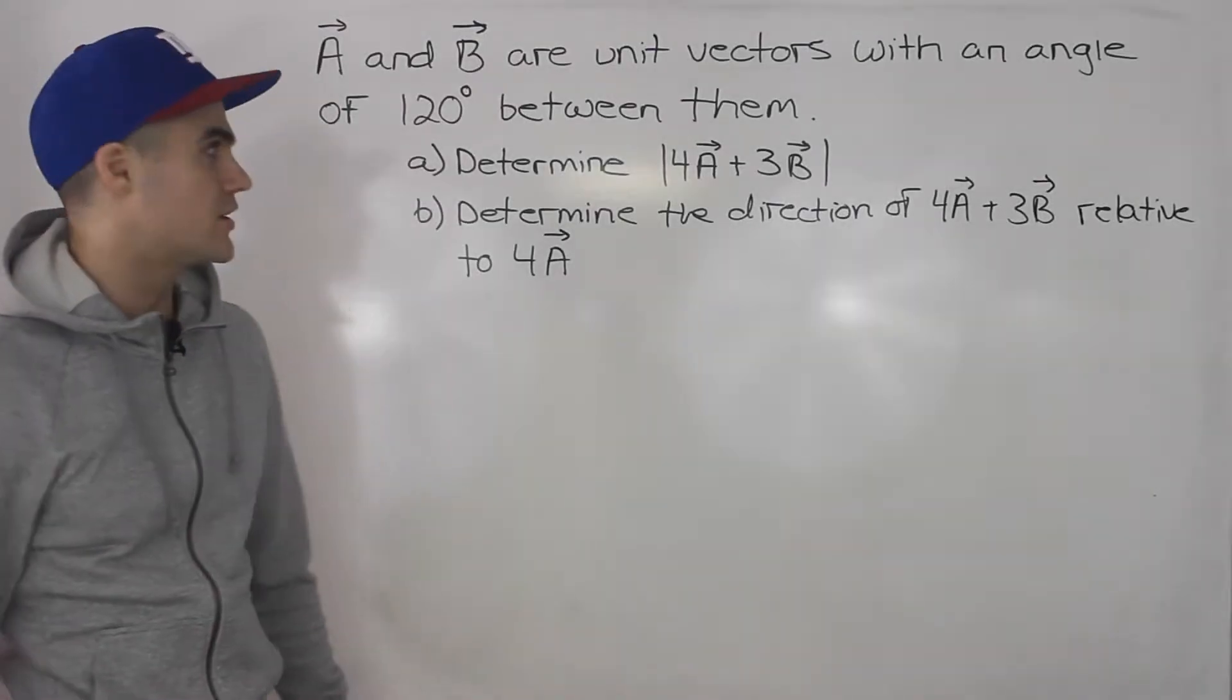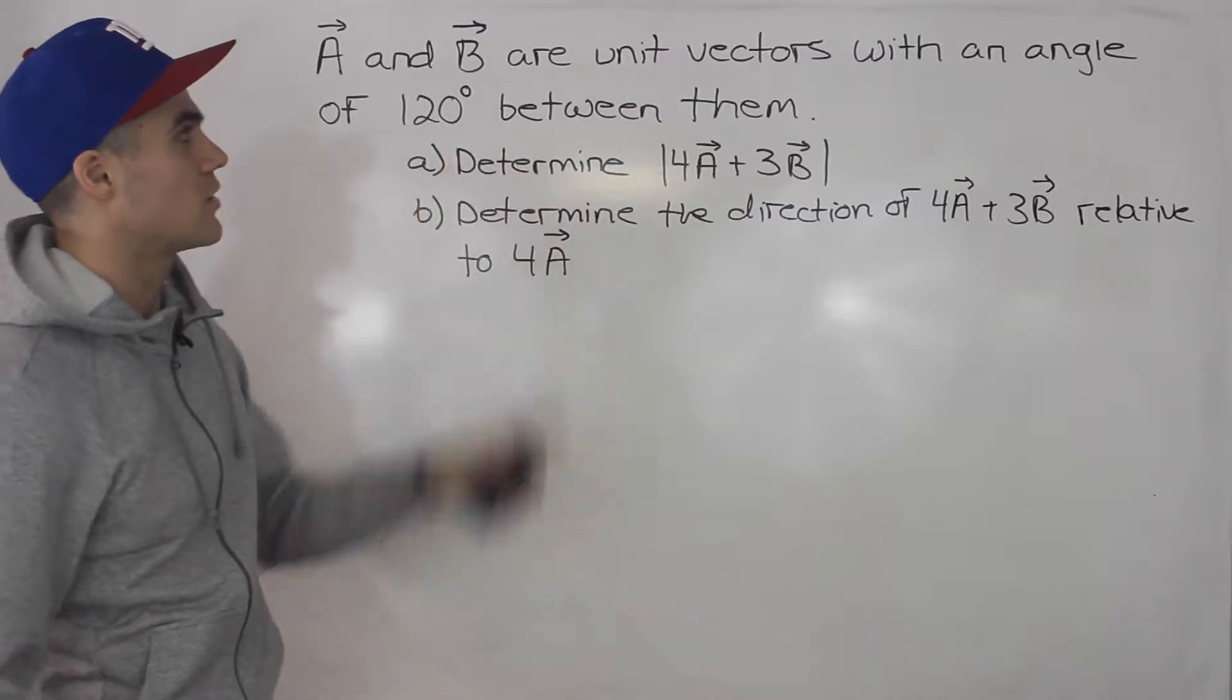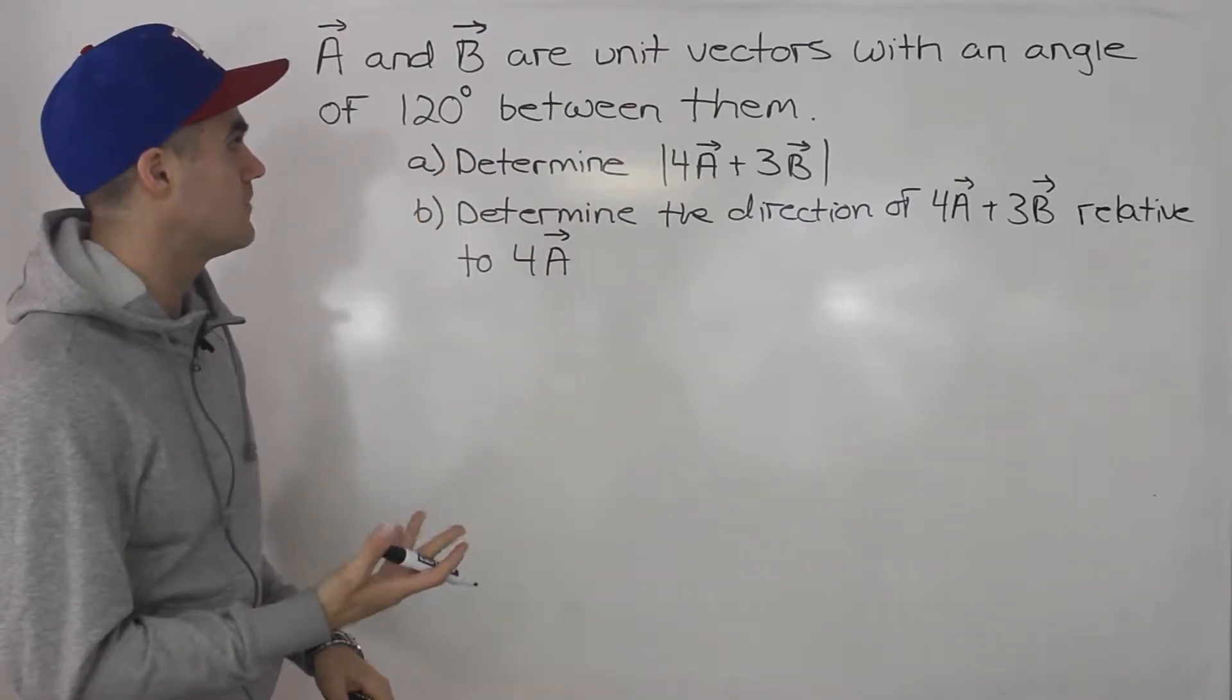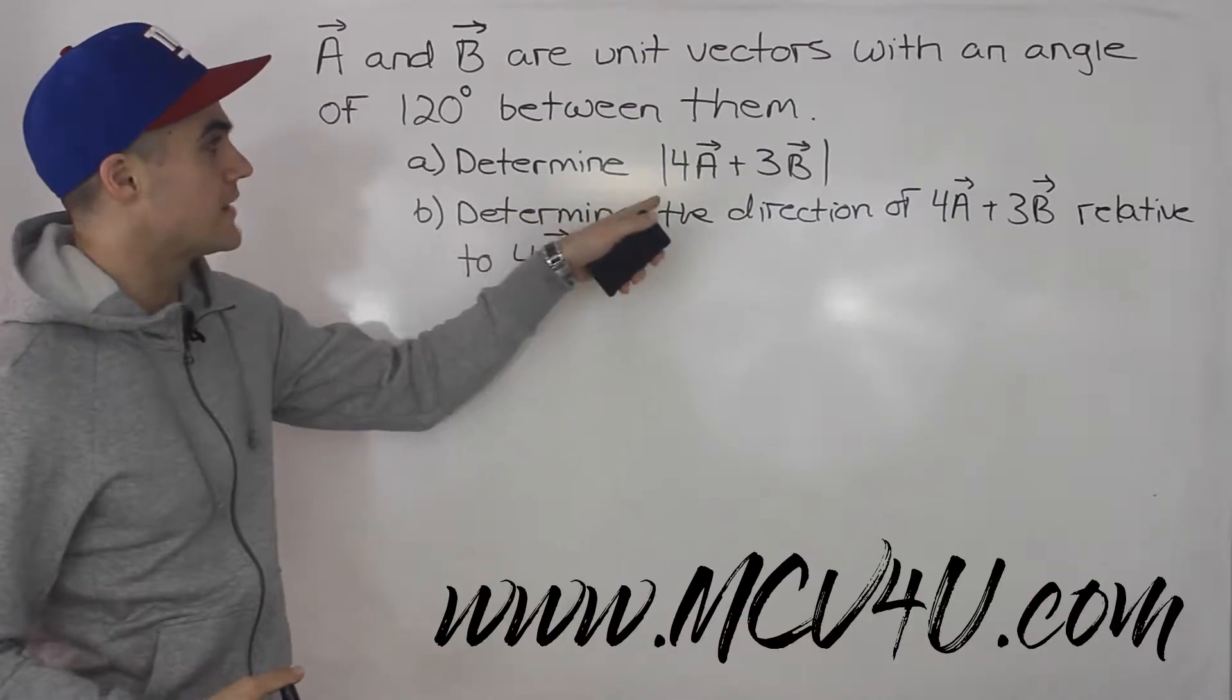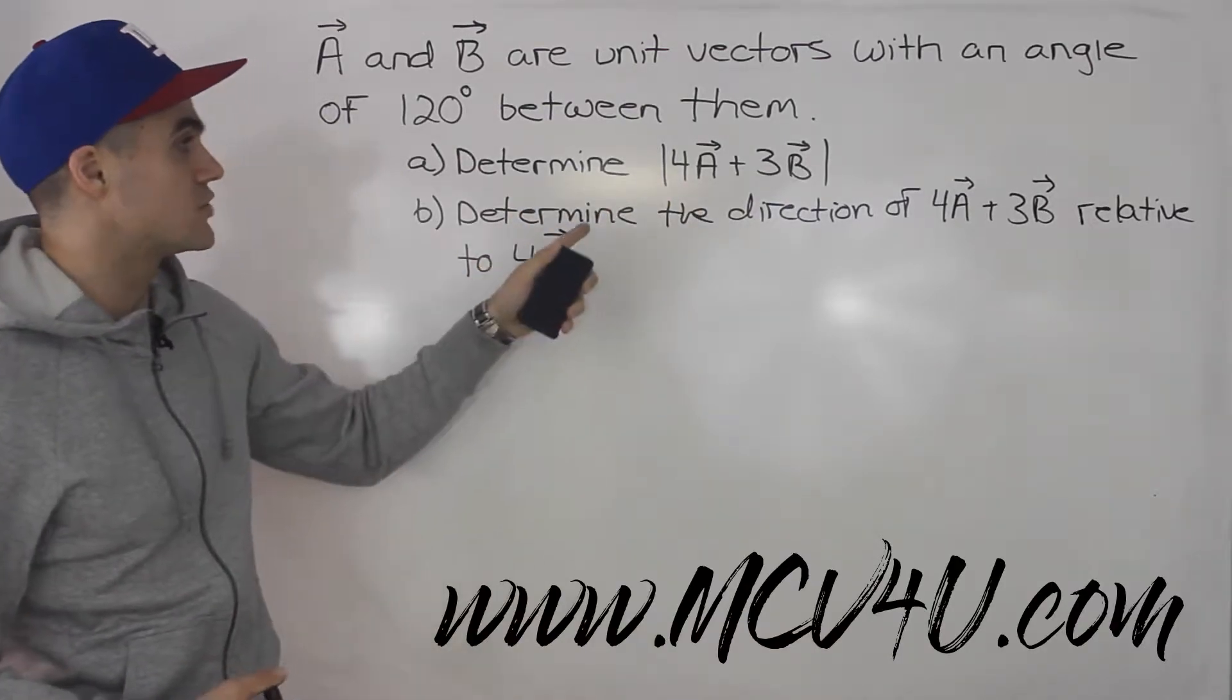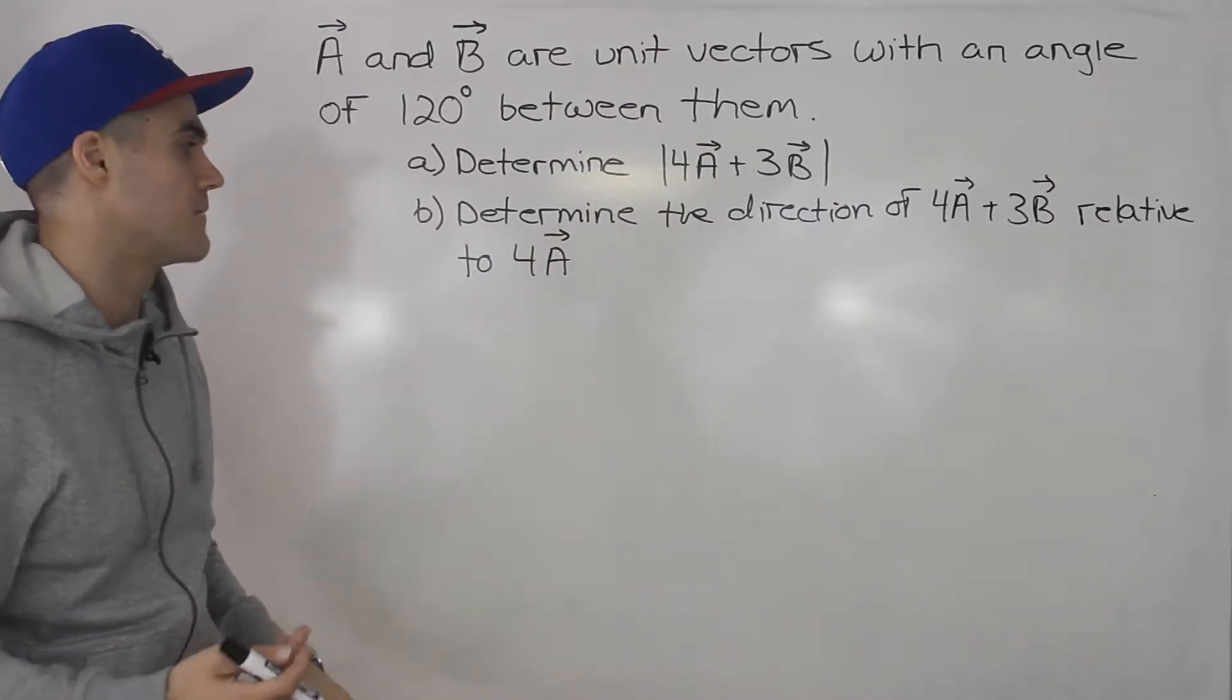What's up everybody, welcome back, Patrick here. Moving on to the next question, we have two vectors a and b and they are both unit vectors with an angle of 120 degrees between them. We have to determine the magnitude of 4a plus 3b and then we have to determine the direction of 4a plus 3b relative to 4a.